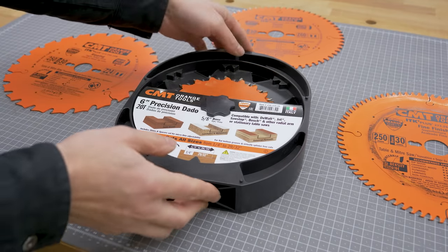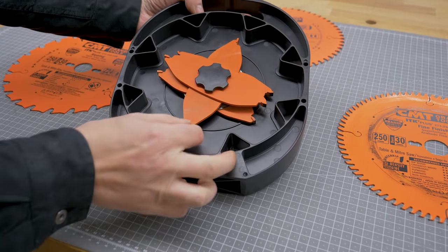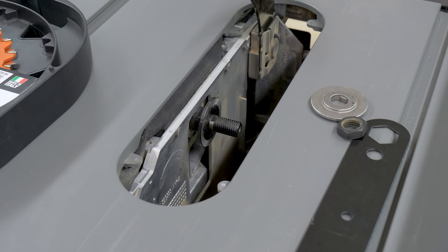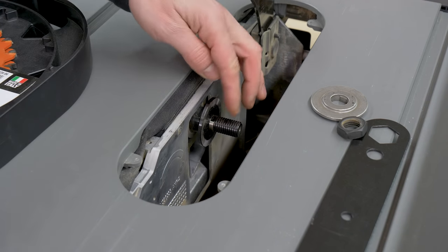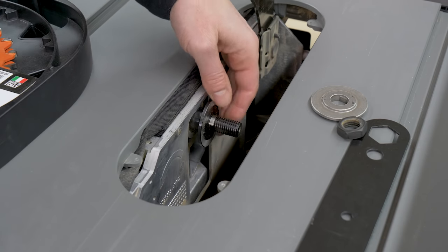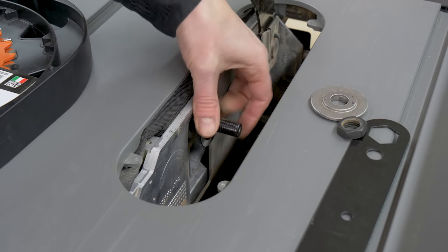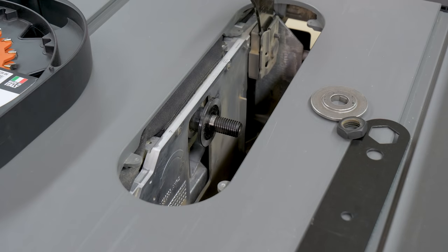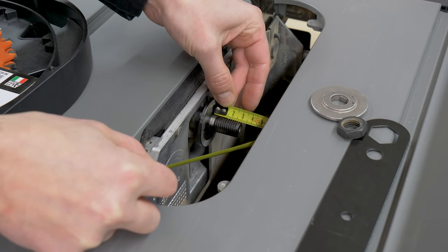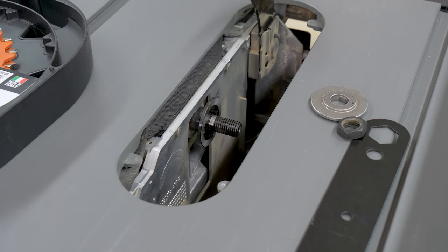This is the dado blade I use with the table saw. It's about 150mm in diameter, and thanks to all its blades and spacers, it can cut grooves between 6 and 23mm. The central shaft hole is 15.8mm, the usual shaft diameter for this type of table saw. In order to use this kind of blade, your saw should have a shaft that's at least 30mm long.